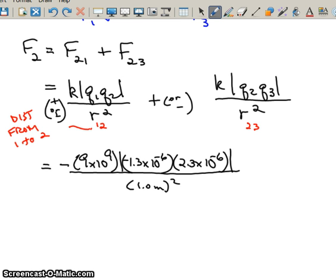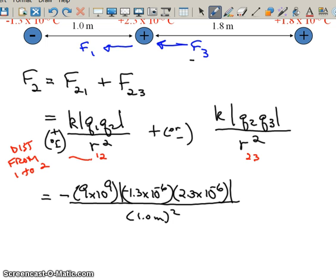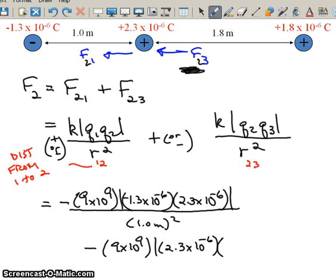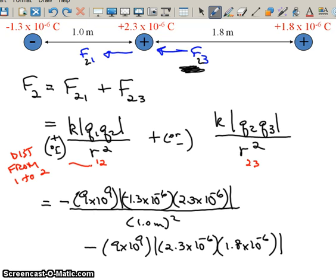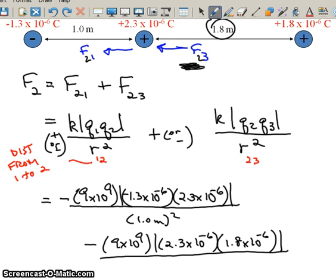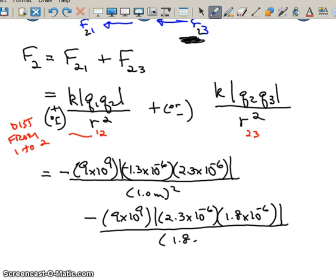And, to this, we know that the force due to 3, force between 2 and 3, this is the force between 2 and 1, this is going to be negative. And, of course, it's going to your left. And so, this is also going to be minus 9 times 10 to the 9th absolute value of the charge 2, which is 2.3 times 10 to the minus 6th times 1.8 times 10 to the minus 6th, divided by the distance between 2 and 3, which we see is 1.8 meters, 1.8 meters squared.